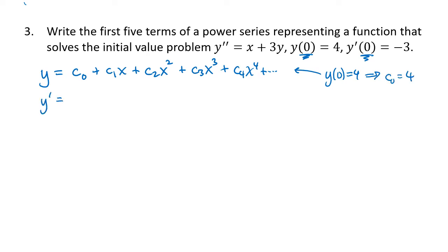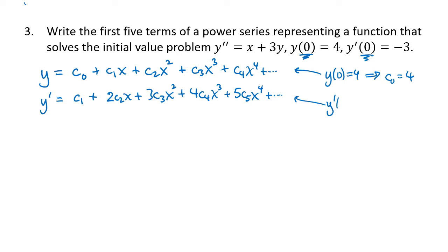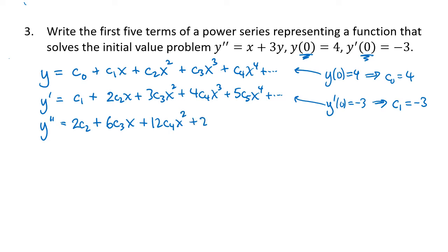To get y'', we first take y': c₁ + 2c₂x + 3c₃x² + 4c₄x³ + 5c₅x⁴ and so on. The initial condition y'(0) = -3 means plugging in zero gives us c₁ = -3. Taking the second derivative gives y'' = 2c₂ + 6c₃x + 12c₄x² + 20c₅x³ and so on. That's the left-hand side of our equation.